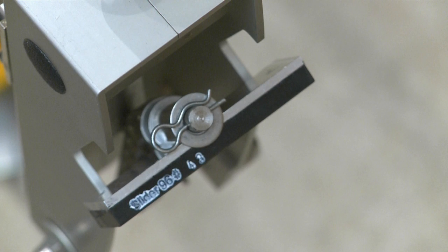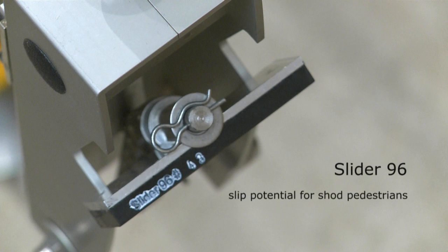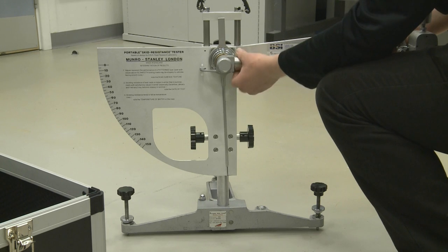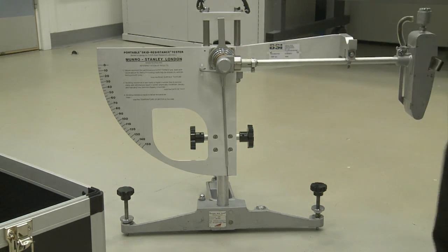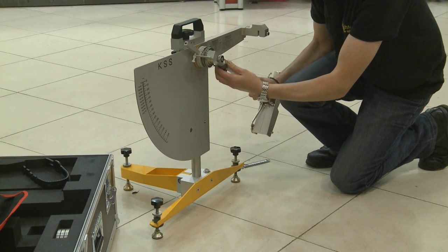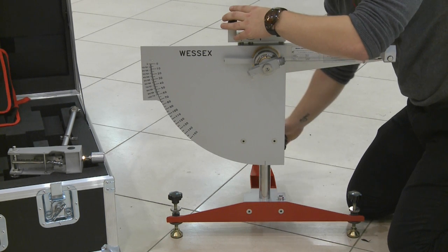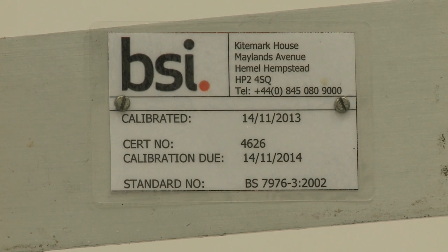We'll be looking at testing using Slider 96 rubber which is designed to measure slip potential for shod pedestrians. We've used the Munro Stanley machine, but we could equally have used the KSS or Wessex testers. Whichever machine you use, it should be calibrated annually.